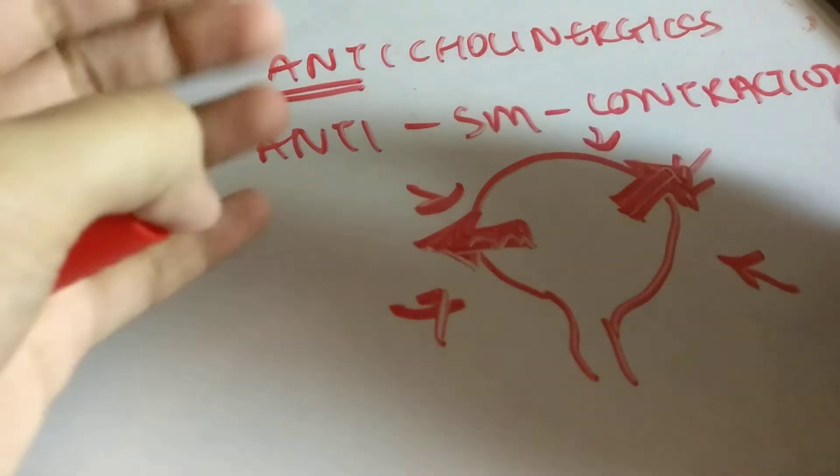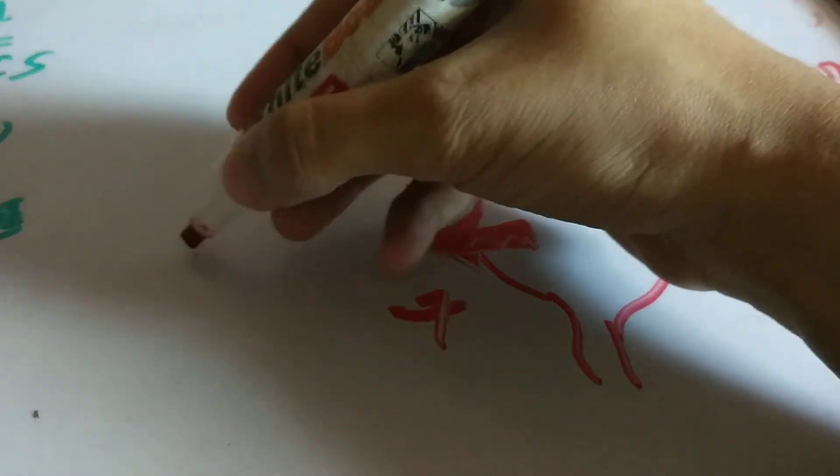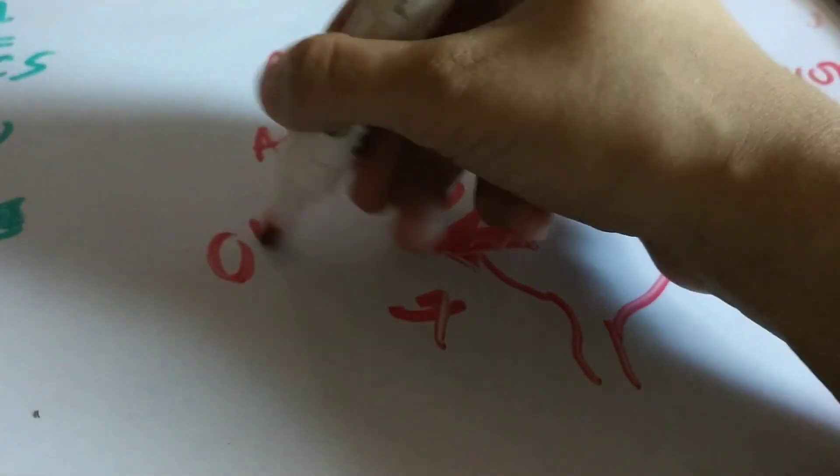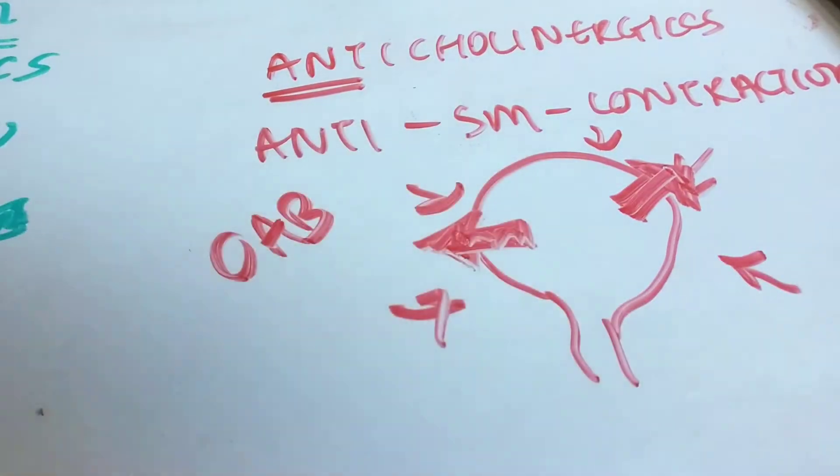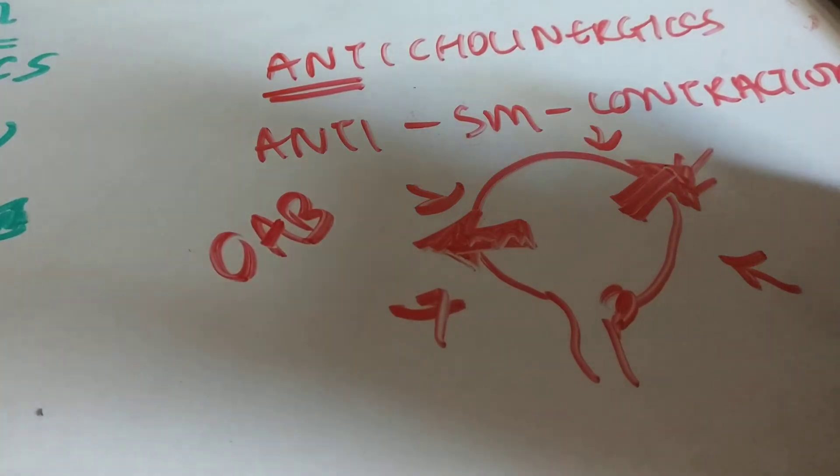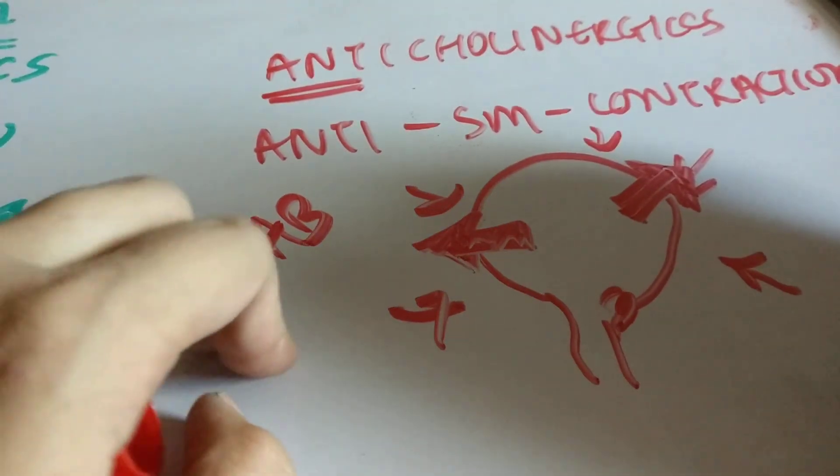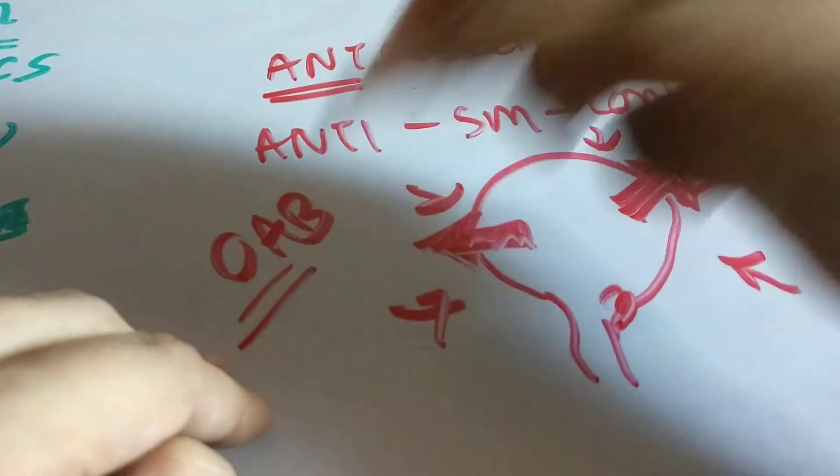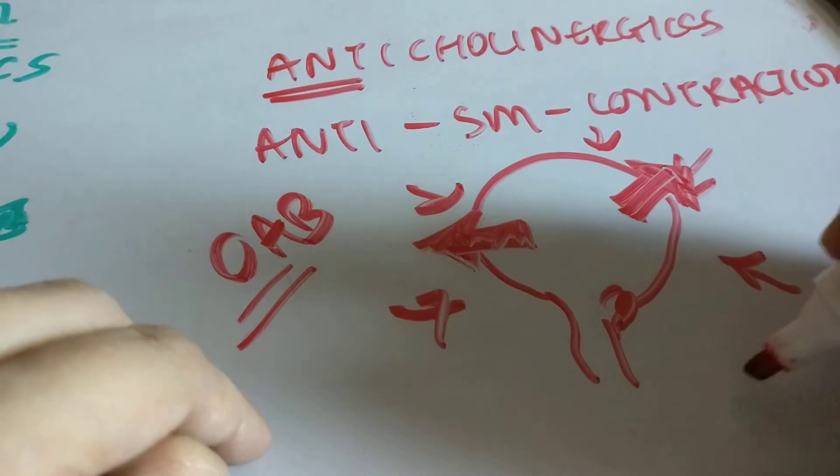An overactive bladder. The bladder can be overactive due to many reasons - maybe cystitis, maybe something irritating the bladder like a neoplasm, causing the bladder to contract even when it's not supposed to. The drug you would use for an overactive bladder is oxybutynin.